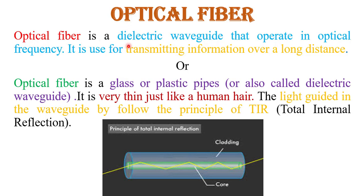Optical fiber is basically a dielectric waveguide that operates at a particular optical frequency. It is used for transmitting information over a long distance. We can say that optical fiber is a glass or plastic, very thin pipe — just like a human hair — and in optical fiber, information is transmitted in the form of light.